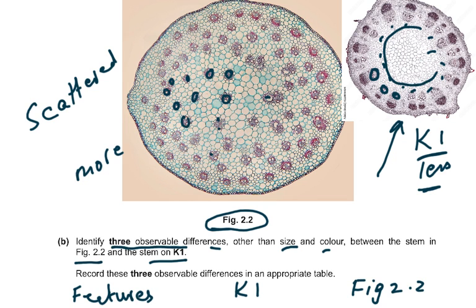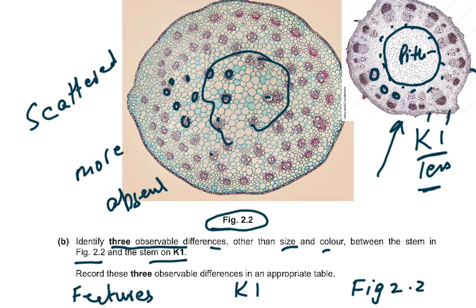Pith is present in K1 — that central portion — but in figure 2.2 the pith is absent; there is no central region. Then trichomes — those hair-like structures — are present in K1 but absent in figure 2.2. So I'm comparing K1, which I have diagrammed here as it could look like the Cambridge slide, with figure 2.2. Three observable differences: things you can actually observe and see.